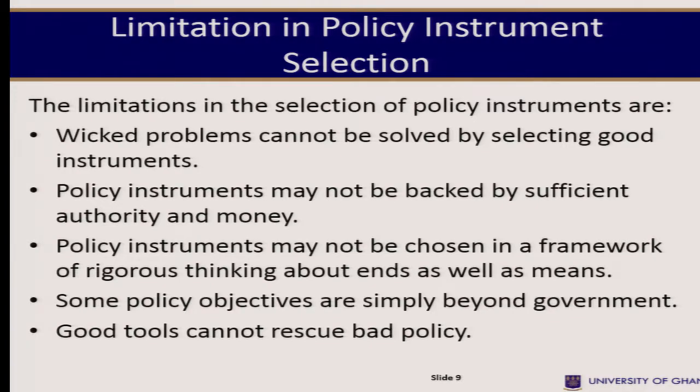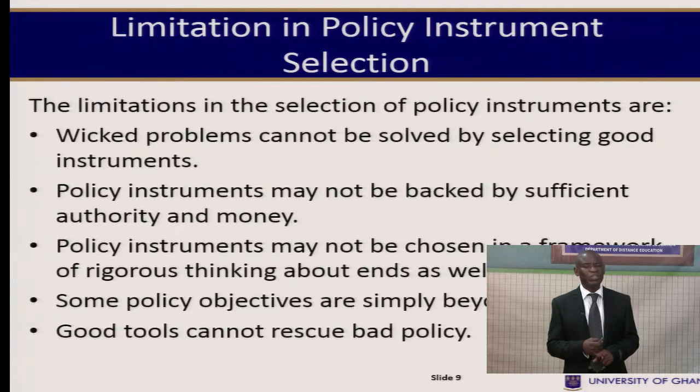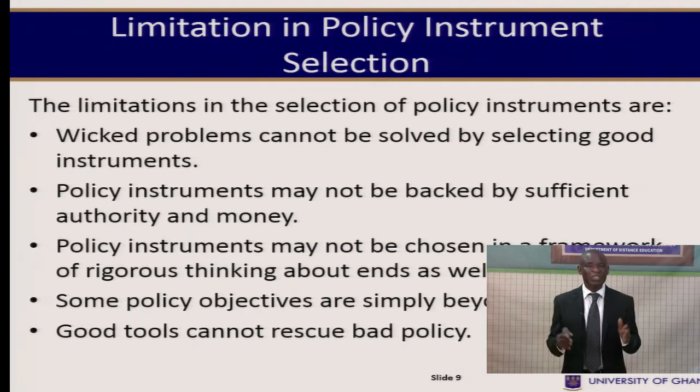The next topic is limitations in policy instrument selection. Wicked problems cannot be solved by selecting good instruments — wicked problems are problems that do not lend themselves to easy solutions, so no matter the instrument used, it may still not be adequate in solving the problem. A policy instrument may not be backed by sufficient authority and money, so even a good instrument cannot implement policy without adequate funding. Policy instruments may not be chosen within a framework of rigorous thinking about ends as well as means. Some policy objectives are simply beyond government, and government tools cannot rescue bad policies.